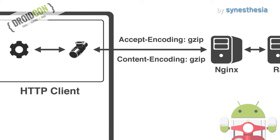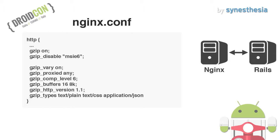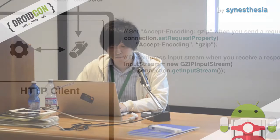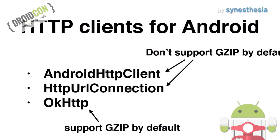How do we compress data? First, add the Accept-Encoding header to the request. Next, make sure to enable GZIP on your proxy server. If you enable GZIP on proxy servers, the proxy server returns a compressed response with a Content-Encoding header. By the way, there are some HTTP clients in Android. Android HTTP client and HttpURLConnection don't support GZIP by default, so if you use them, you need to decompress the response manually. And Android HTTP client is now deprecated — you should use other HTTP clients.